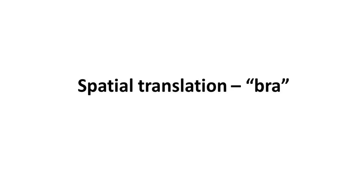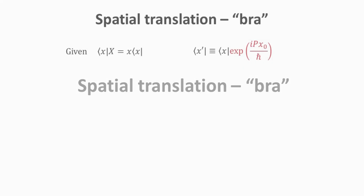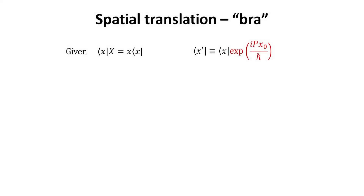Part 2: Spatial Translation — the bra version. It will be a good exercise to repeat the derivations for the bra version. We start by taking the adjoint of the equations for the ket counterpart. Note the sign in the exponent for the translation operator, which is now plus instead of minus. Will it translate the eigenstate by positive or negative x_0? Let's find out.